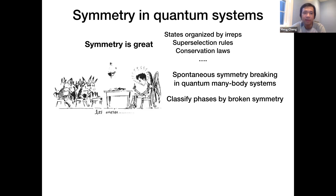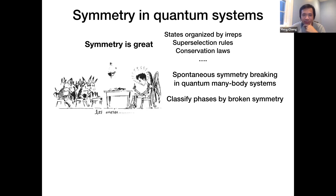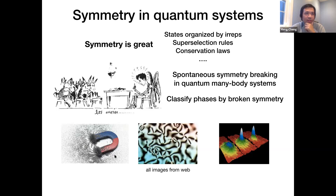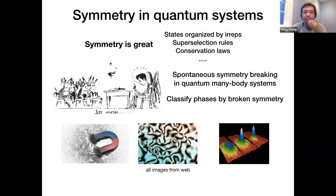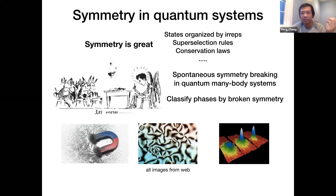As we learned from Landau, spontaneous symmetry breaking provides a general scheme to classify different phases of matter. The coarsest way is to say which ones break symmetries and which ones do not. Those that spontaneously break symmetries are called ordered, and those that do not are called disordered. One good thing about symmetry breaking is you can easily find pictures that visually capture what happens — a magnet spontaneously breaks spin rotation symmetry, a liquid crystal breaks spatial rotation symmetry, and a superfluid or Bose-Einstein condensate breaks conservation of particle number.